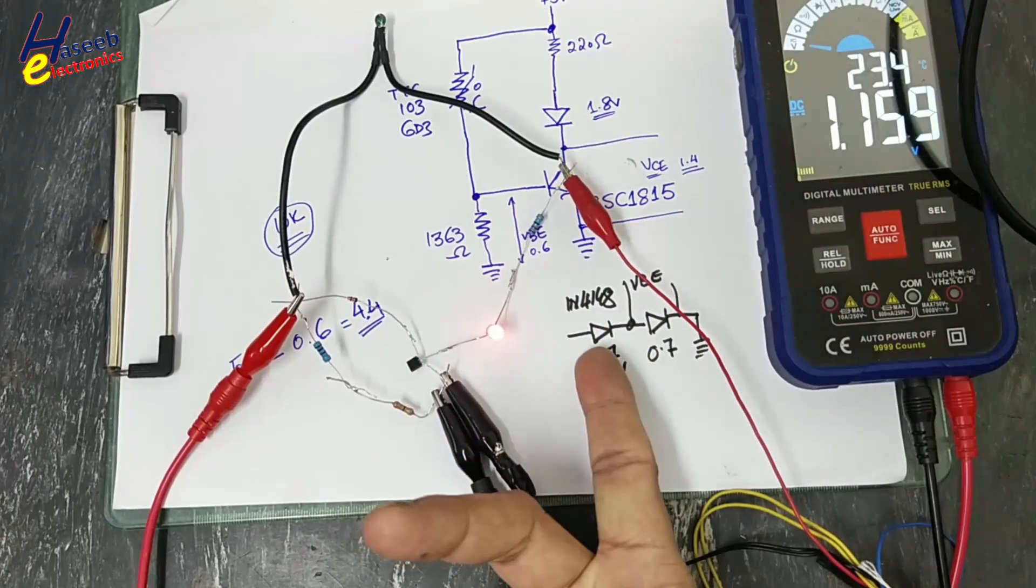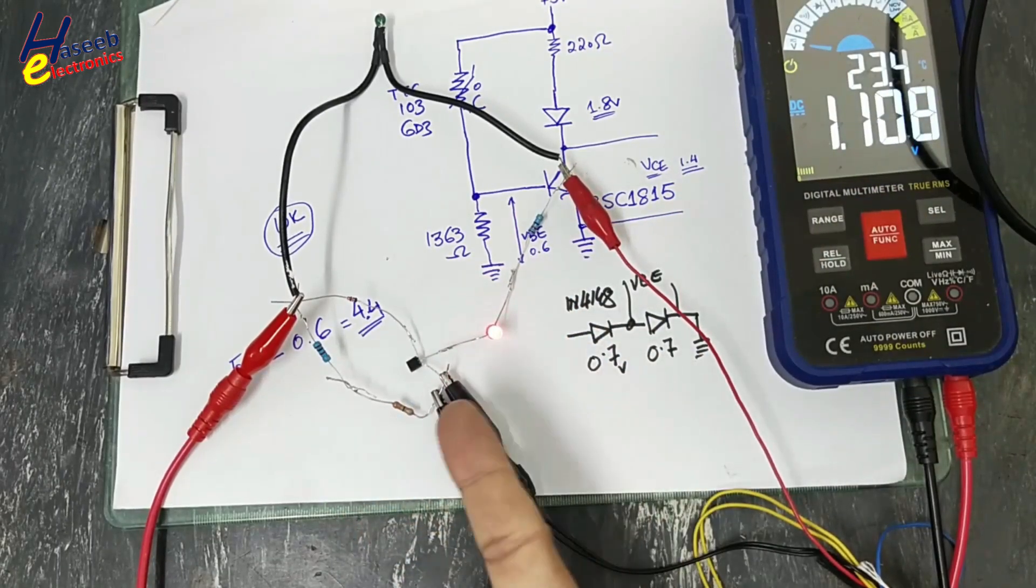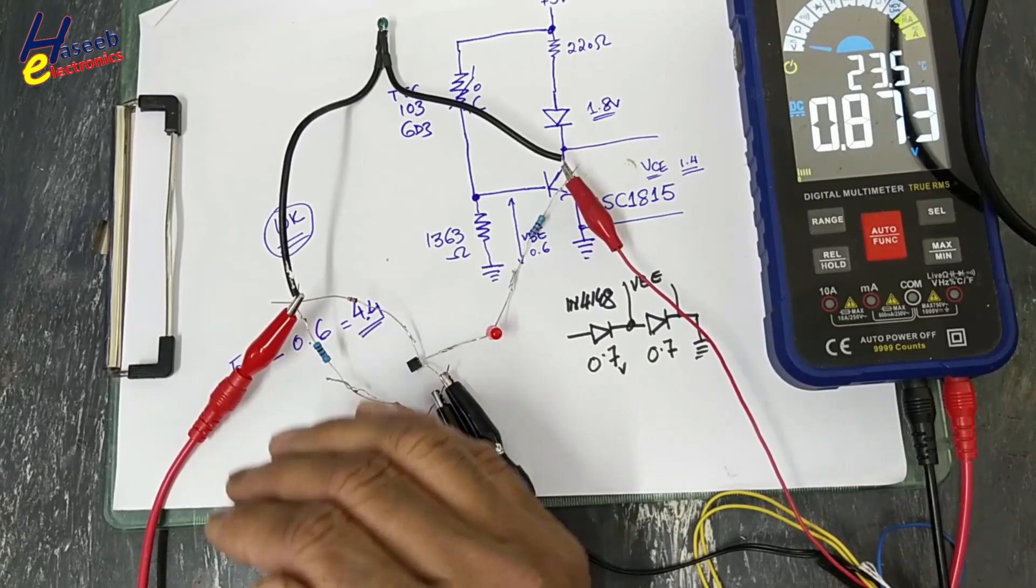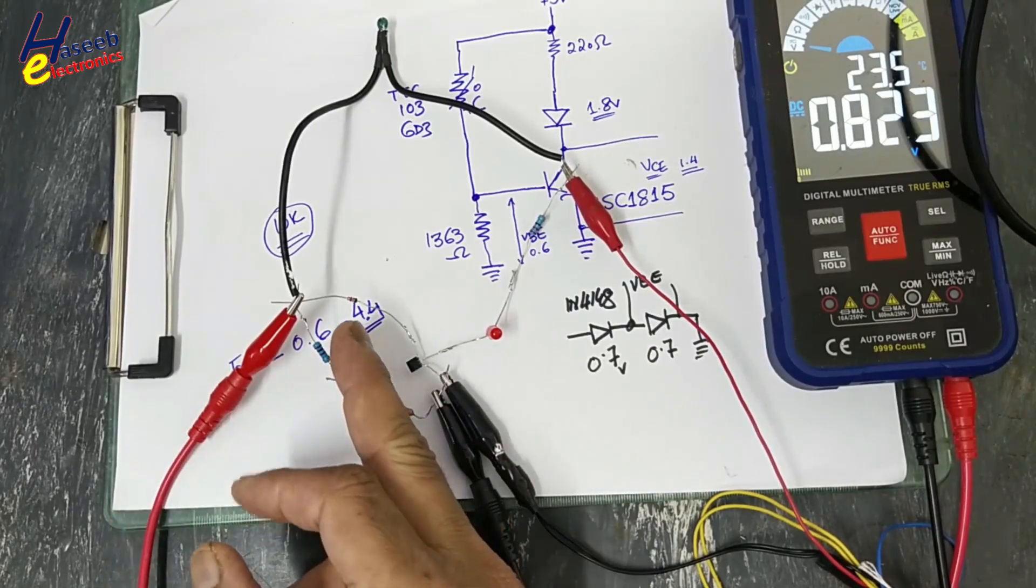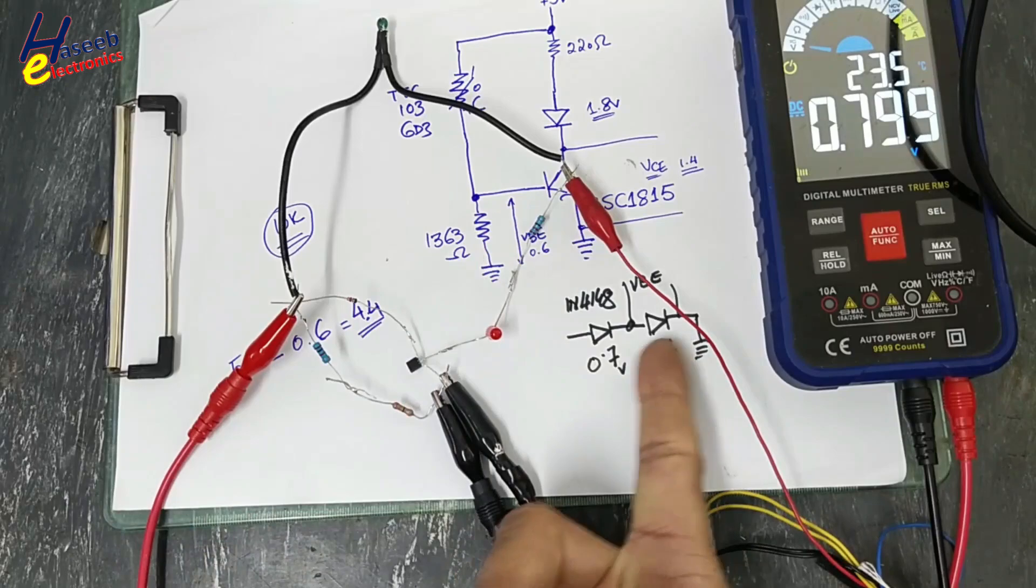So both junctions are in series. If you want to increase this limit at a more higher level, we can connect two diodes in series in the same configuration.